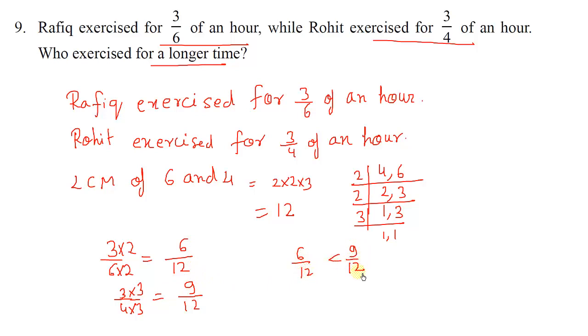Now we'll compare: 6 upon 12 and 9 upon 12. 9 upon 12 is larger, and who is exercising 9 upon 12? Rohit. Rohit exercised for a longer time. We'll write: Rohit exercised for a longer time. Rohit is exercising more than Rafik.